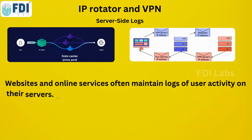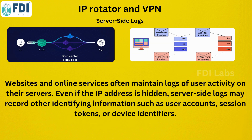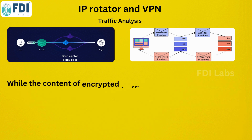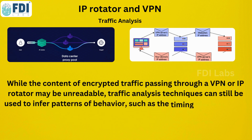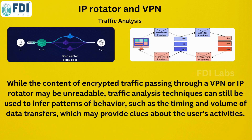Websites and online service server logs record user activity in addition to IP address analysis. Important data like user accounts, session tokens, and device IDs may still be present in these server logs even if the user's IP address is hidden. Furthermore, there are ways to decipher encrypted traffic even when using VPNs or IP rotators. Traffic analysis techniques can be beneficial — analysts can infer what users are doing by examining variables like the amount and timing of data sent.